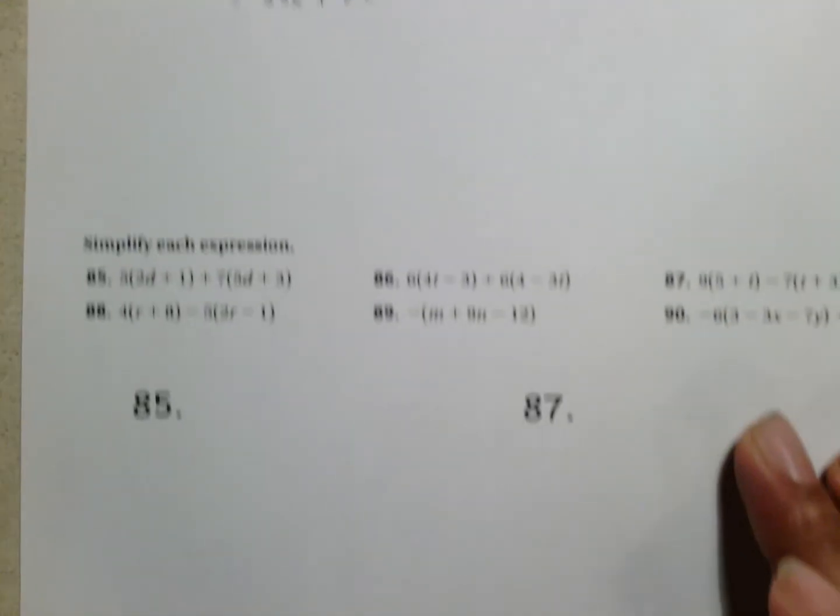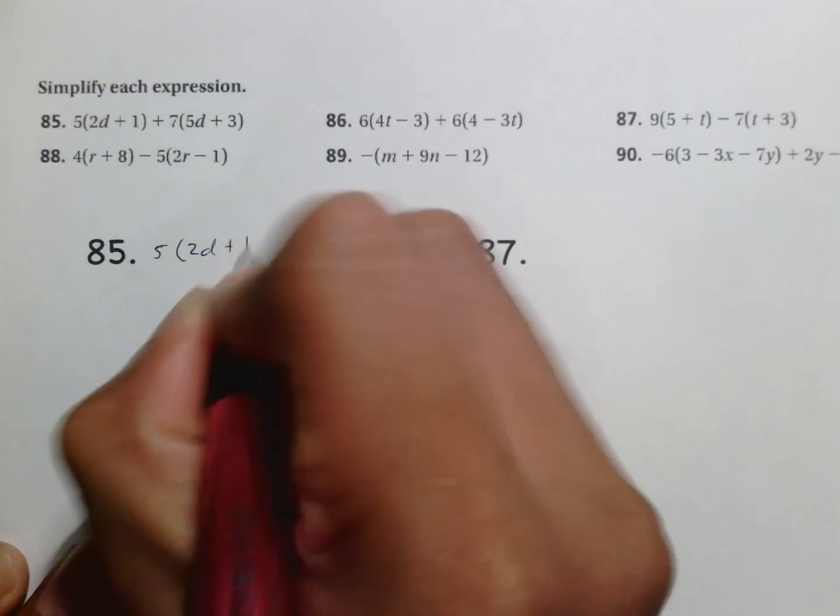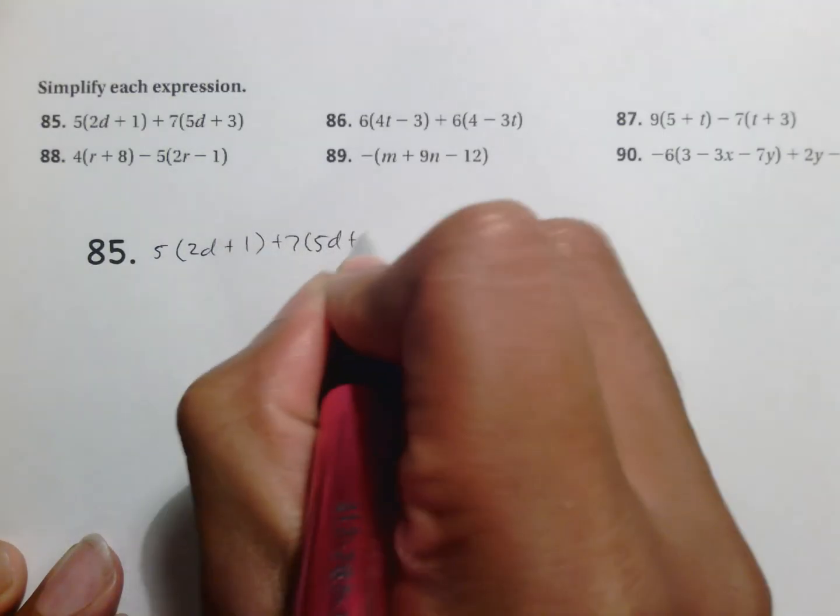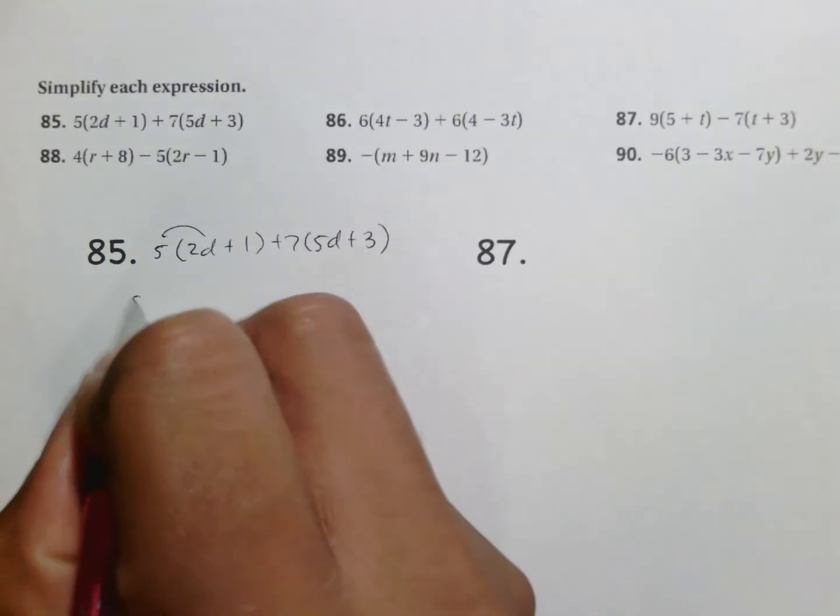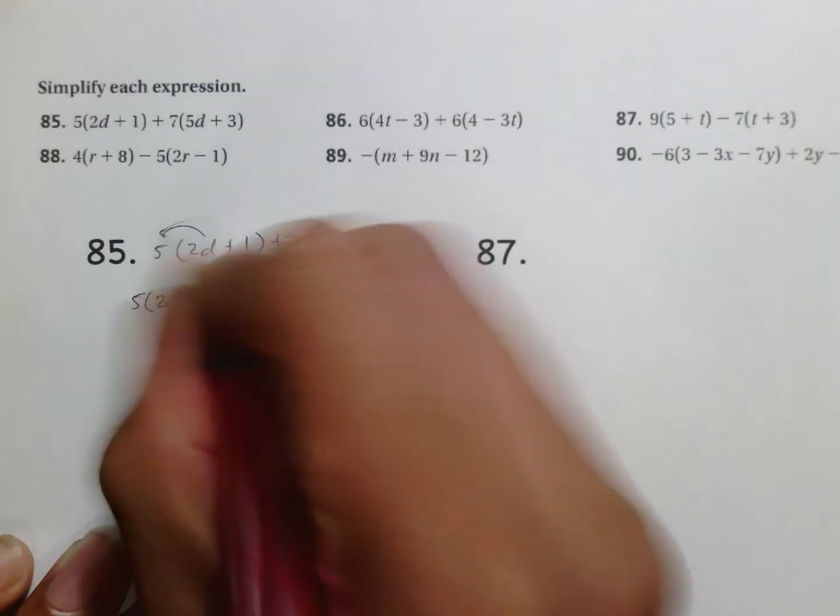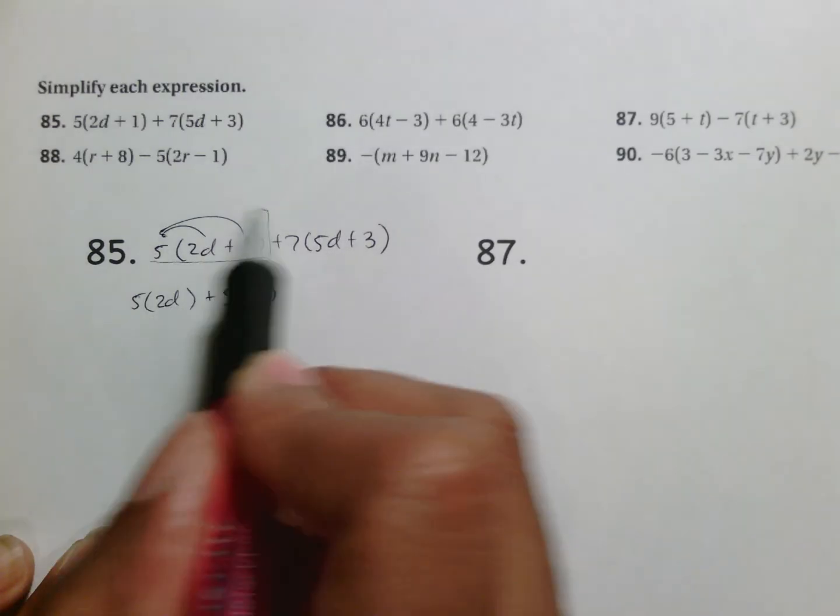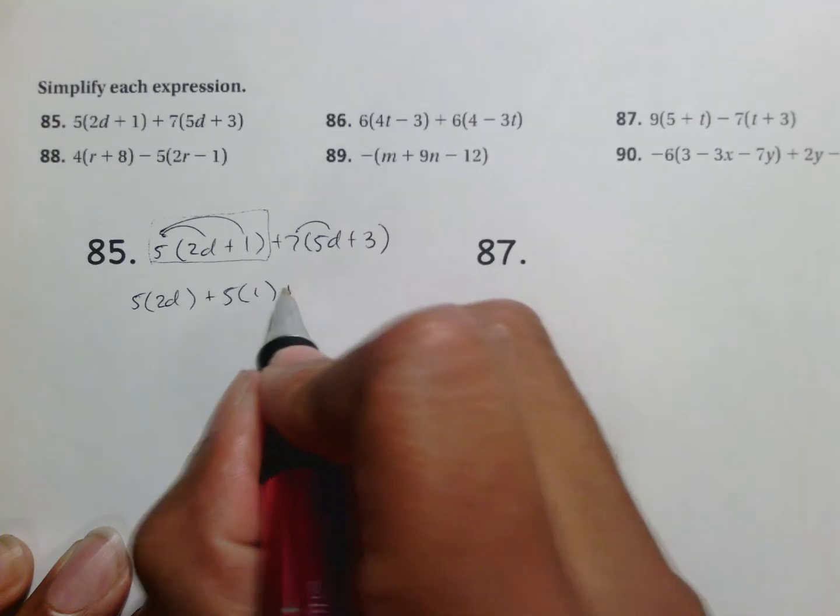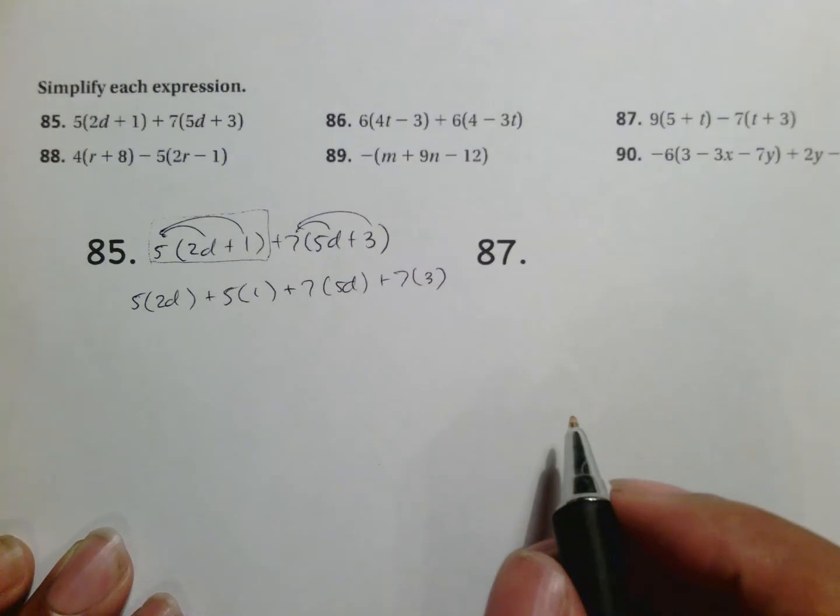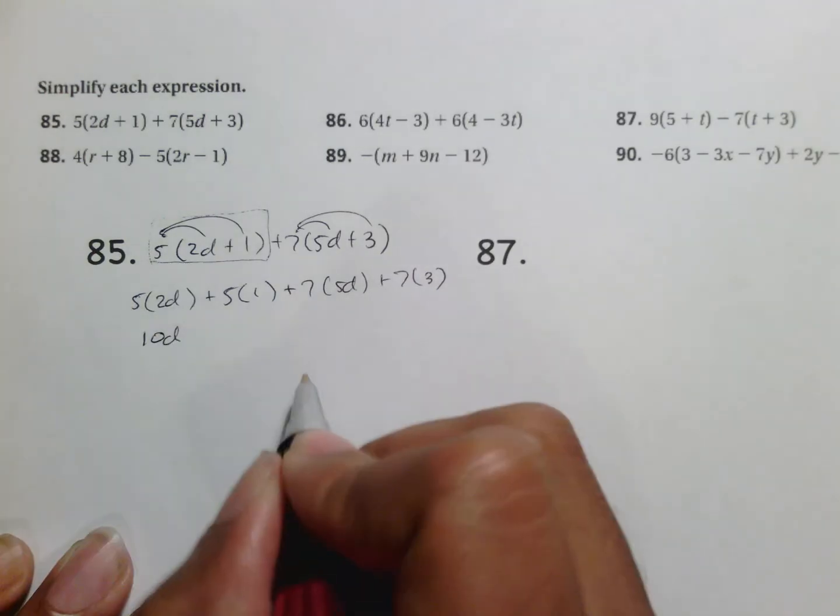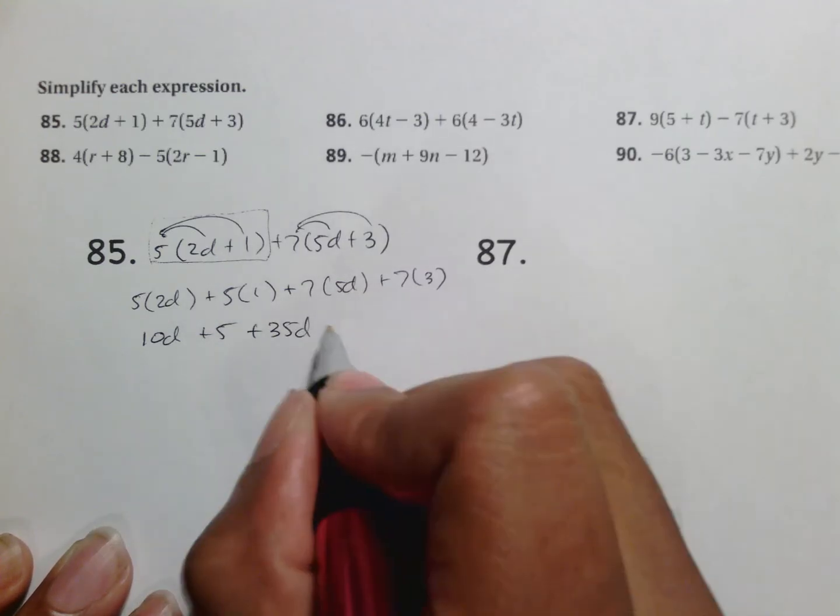Two more very quick things to look at before we go. 85. Which simply gives us two distributive properties to do. So in this case 5 meets 2d. And 5 meets 1. That's done. Now this set is it's own group. So that's where we stop right there on that part. Because on the second part you have 7 meeting 5d. And 7 meeting 3. Simplify all your connections. 5 times 2d is 10d. 5 times 1 is 5. 7 times 5d is 35d. 7 times 3 is 21.